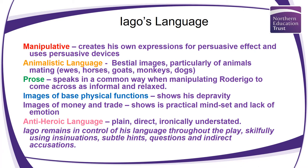Before we begin reading Act I, let's first consider Iago, and in particular Iago's language. His malcontent is very important as a character. He seems to create his own expressions — ones not in the vernacular of Shakespearean times but invented himself for persuasive effect. He will often use animalistic language: bestial imagery, particularly of animals mating. He mentions ewes, horses, goats, monkeys, dogs, to emphasize his baseness and his belief that humans are animalistic in nature.